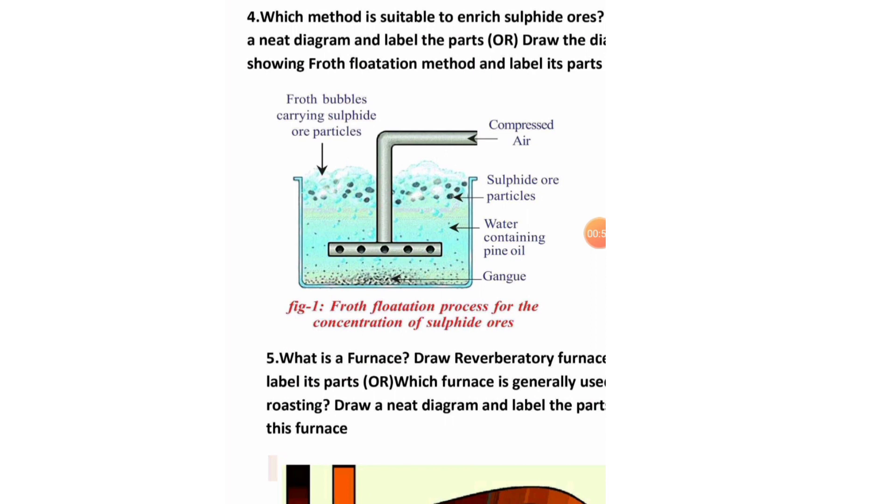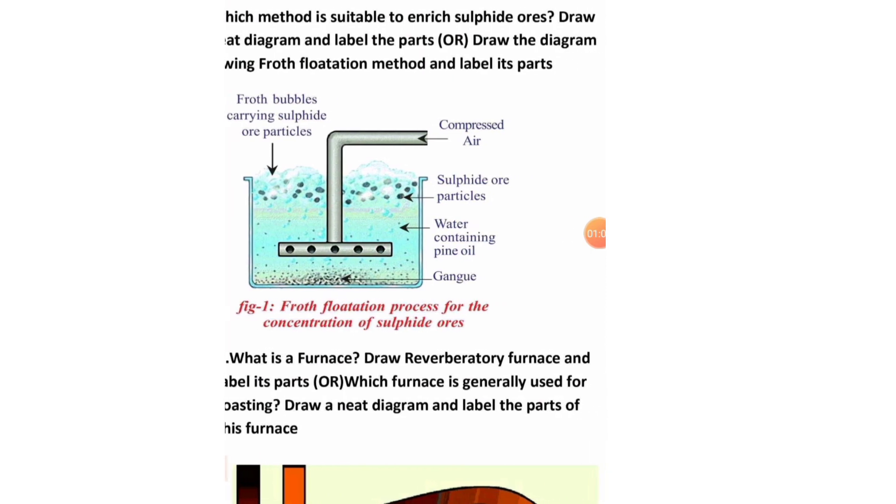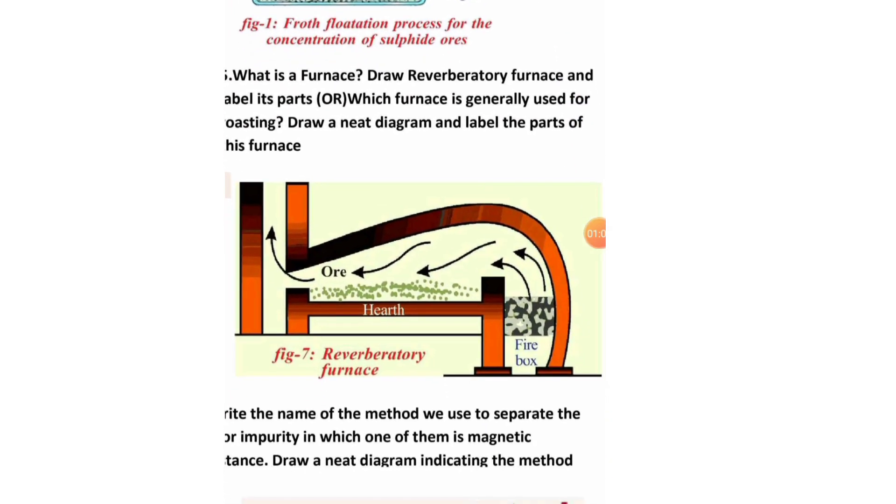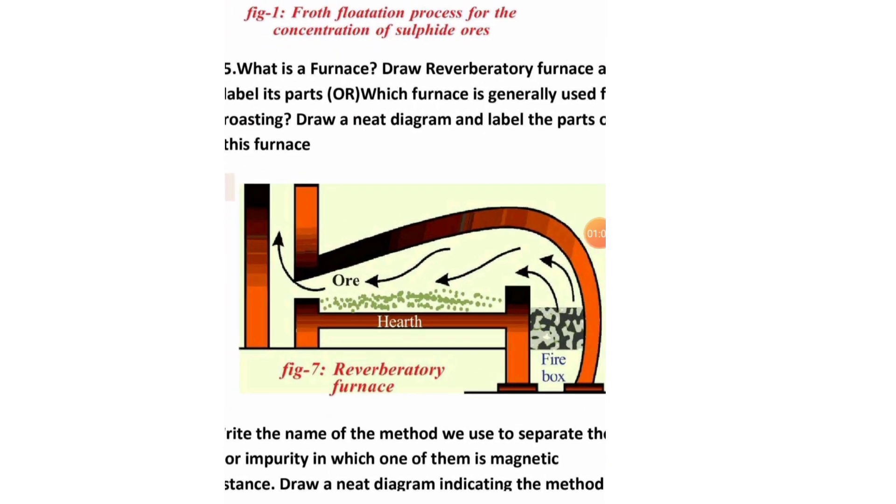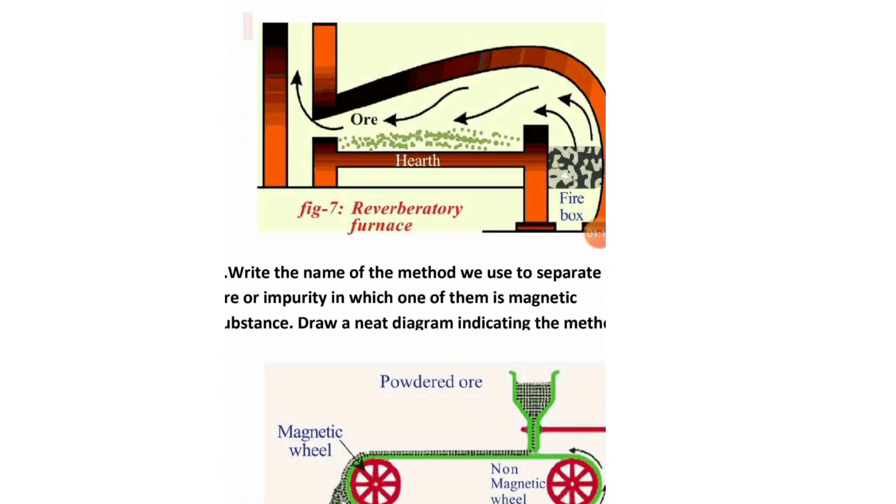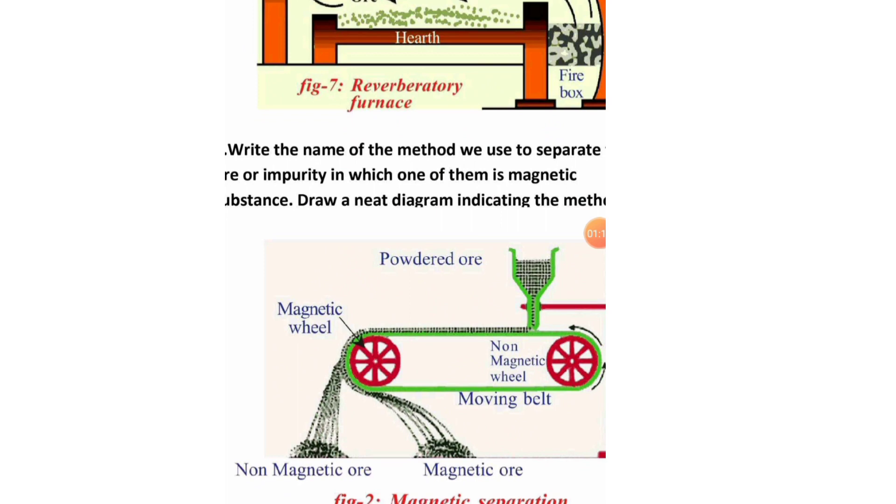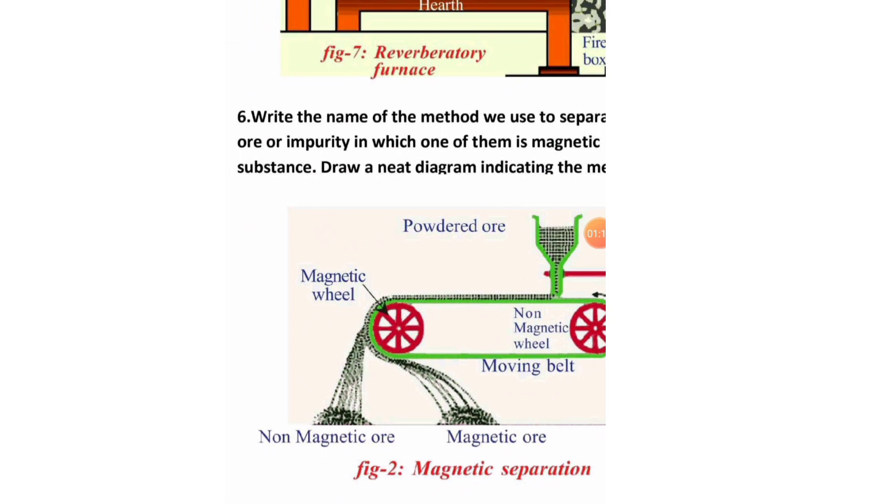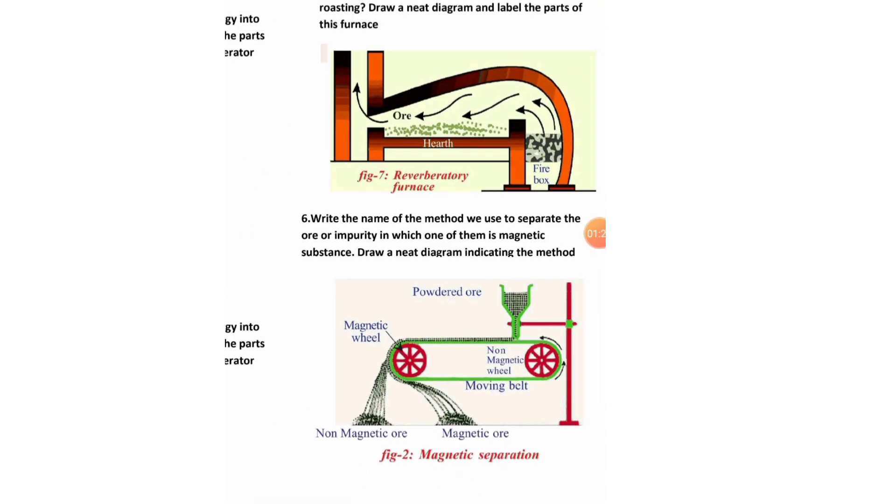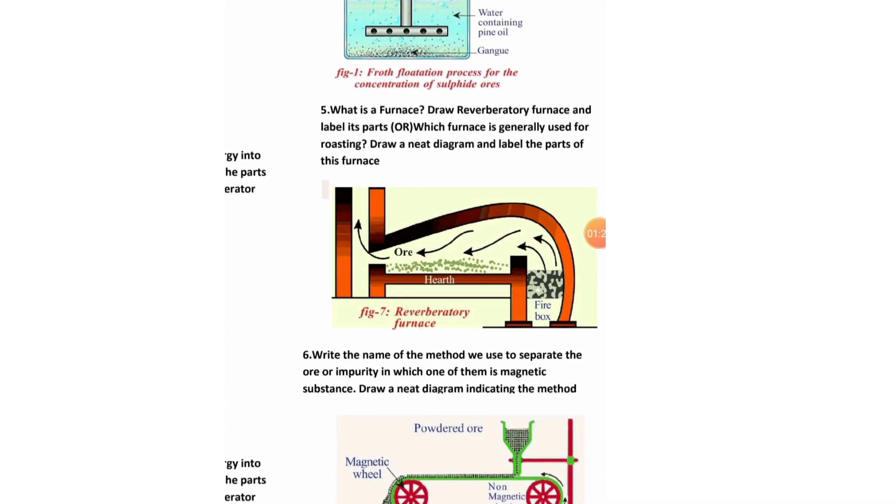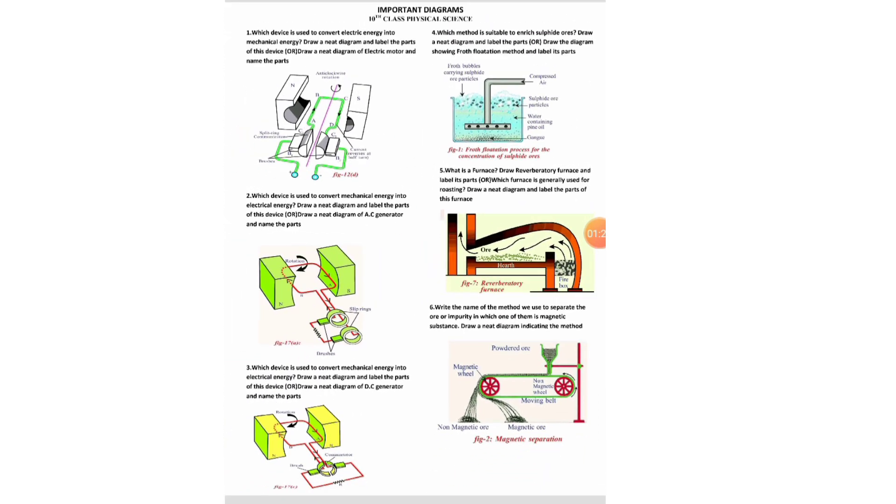DC generator and its parts. Next question: which method is suitable to enrich sulfide ores? Chemistry here. What is furnaces? That is very, very important question. Reverbratory furnace, very important. Next, write the name and method we use to separate the ore from impurity which contains magnetic substance. This is the diagram. These are the diagrams we are having in the first page. Total six diagrams are there. Very important diagrams.